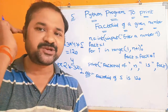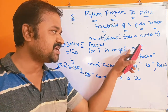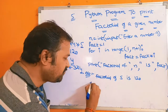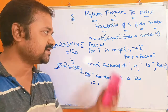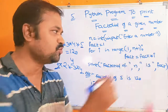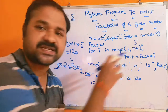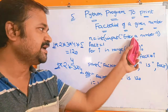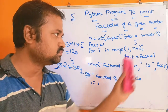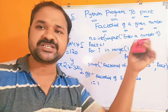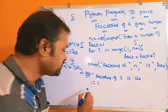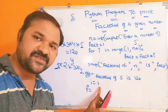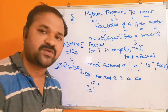Initially, i = 1. The condition is true since the loop repeats up to n (here n=5). So the body executes: fact = fact × i = 1 × 1 = 1. Since step count is not given, default step is 1, so 1 is added to i. Now i becomes 2. 2 ≤ 5, condition is true. fact = 1 × 2 = 2.